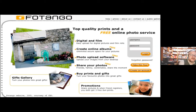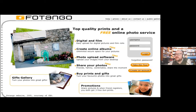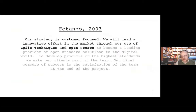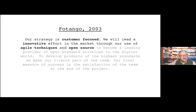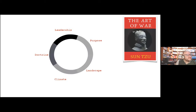This started 17 years ago. I was working for a company called Fotango — an online photo service, very profitable, revenue growing. I had a slight problem though: the CEO was completely clueless, making stuff up as they went along. I know this because I happened to be the CEO. I used to come up with wonderful statements about strategy — 'our strategy is customer focus, we will lead an innovative effort in the market through our use of agile techniques and open source.' But the problem was I literally pinched it from another company and just changed a few words.